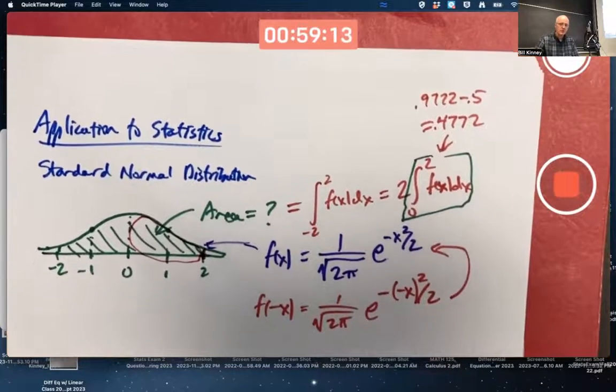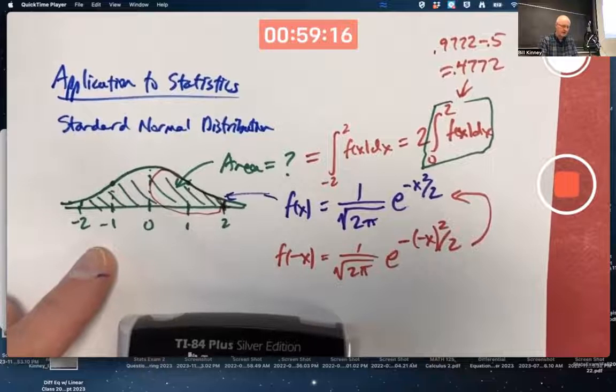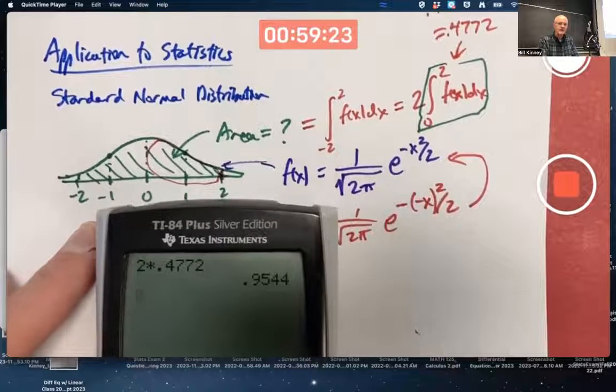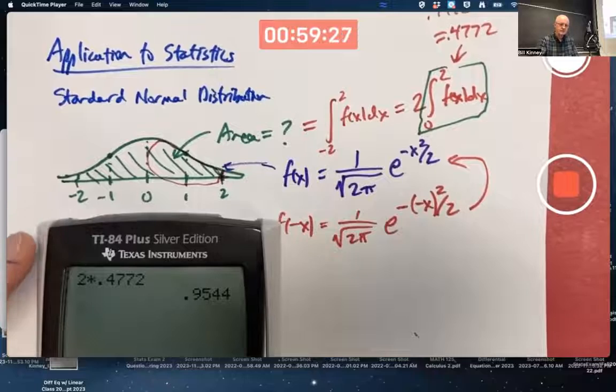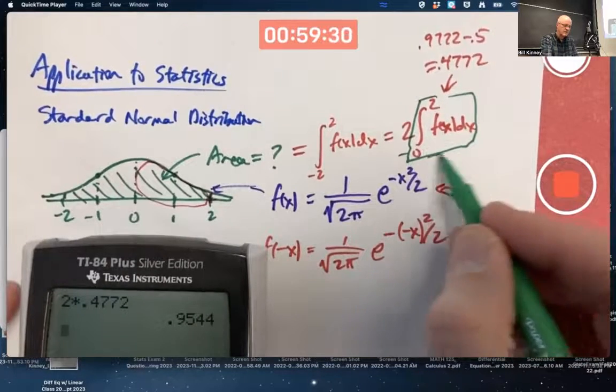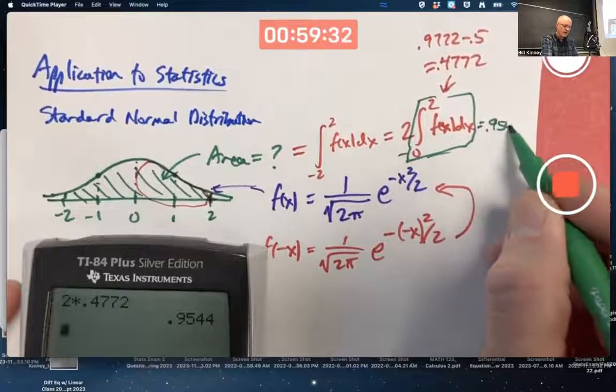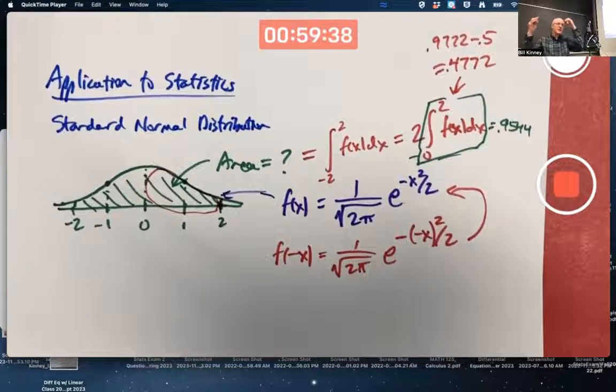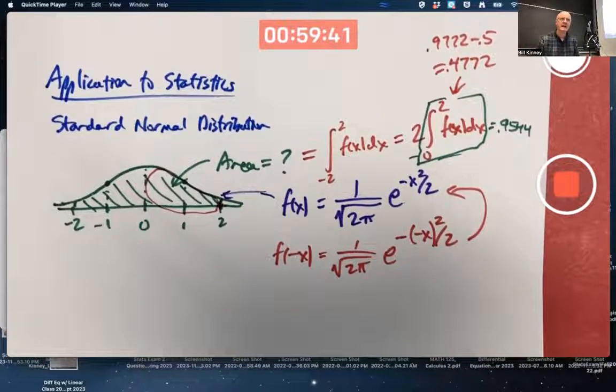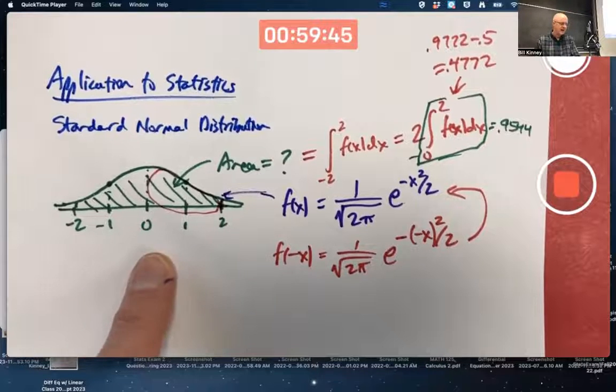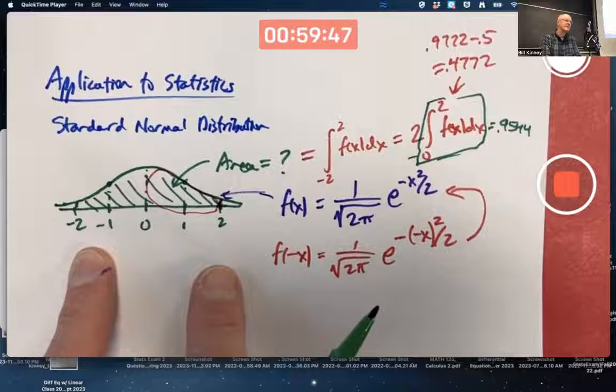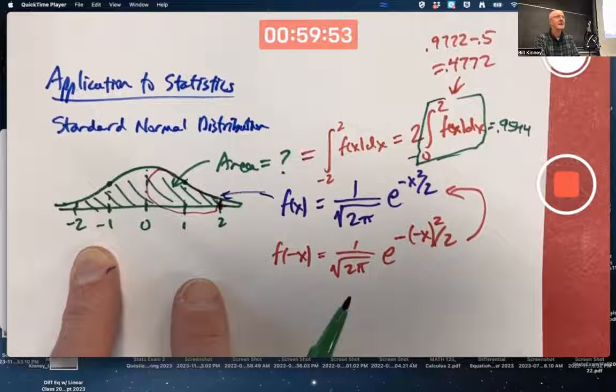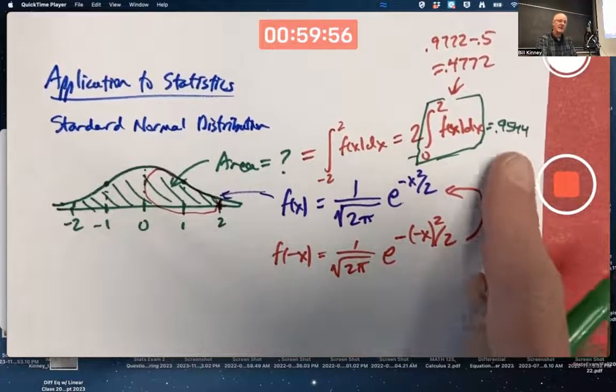So, I do need to multiply it by 2 to get the total green area. 2 times 0.4772. The total green area is about 0.9544. That's the final answer here for 2 times the integral 0.9544. That's the total shaded green area. And if you've had stats before, you might remember the 68, 95, 99.7 rule. About 95% of the area is between negative 2 and 2. It's said to be within two standard deviations of the mean. If you haven't had statistics, don't worry about what that means. It's about 0.9544.